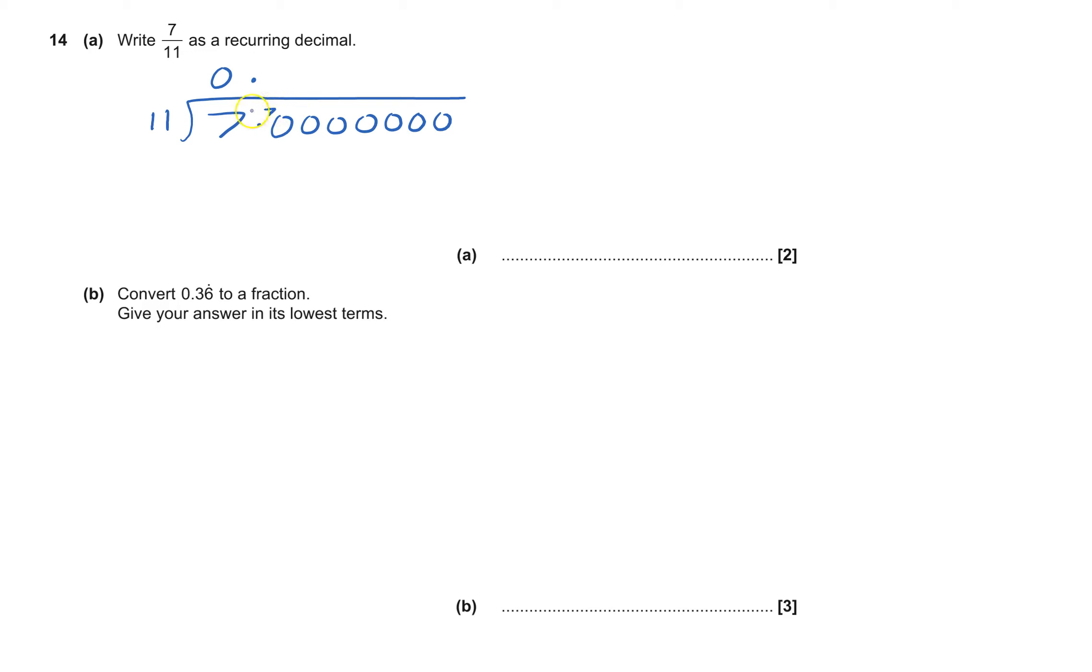Does 11 go into 70? Yes, it goes six times. Six times 11 is 66, that would be a remainder of 4. Does 11 go into 40? Yep, it goes three times. Three times 11 into 40, so that's 3 times 11 equals 33, that's a remainder of 7.